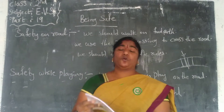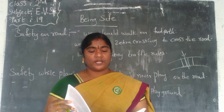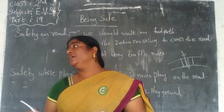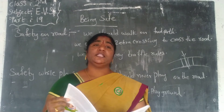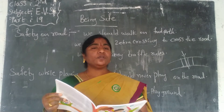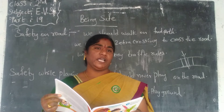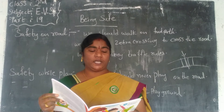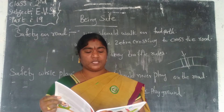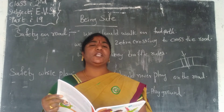When we are at a zebra crossing, we should first look to the right, then to the left, and then cross the road. We should always obey the traffic rules — it is compulsory to obey the traffic rules.